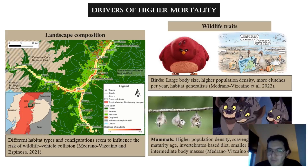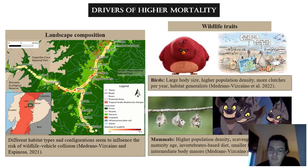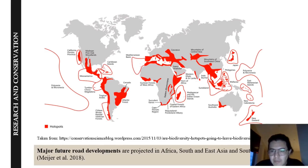Some wildlife traits have been found to be important predictors of mortality. For example, larger birds with higher population density and more clutches per year have shown higher mortality, as well as mammals with higher population density, scavenger diet, and smaller home ranges.